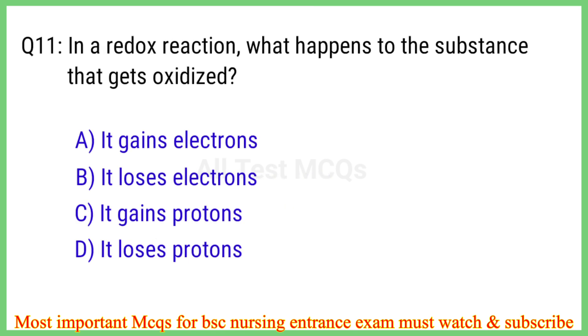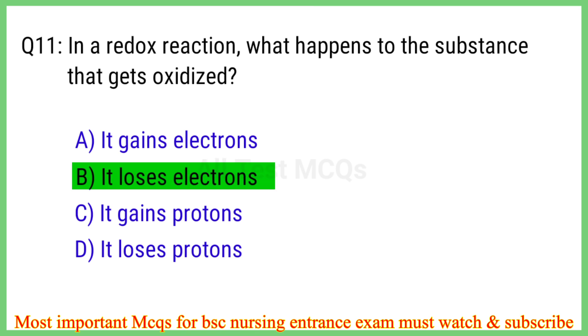Q11. In a redox reaction, what happens to the substance that gets oxidized? The right answer is option B: It loses electrons.